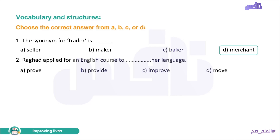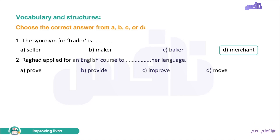Number two. Raghad applied for an English course — Raghad applied for an English language training course. Was it to space her language, to prove (tuthbit), to provide (yuzawed), or to improve (yuhassin)? The answer is 'to improve her language.' Bravo.